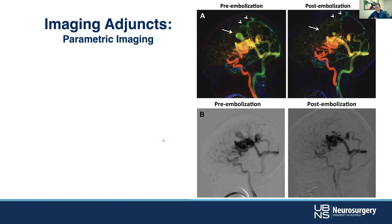This is what we call parametric imaging — something we've helped co-develop here. It essentially takes the qualitative aspects of angiography — where I use my eyes and interpret what I see — and puts numbers to it, moving from qualitative angiography to quantitative angiography. In this case, we're looking at transit time: how long it takes for a bolus of dye to get from artery to capillary to vein.